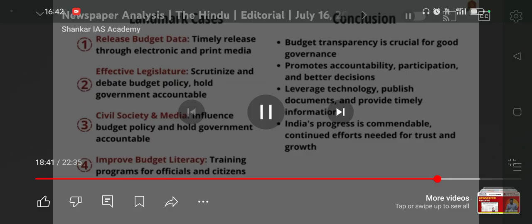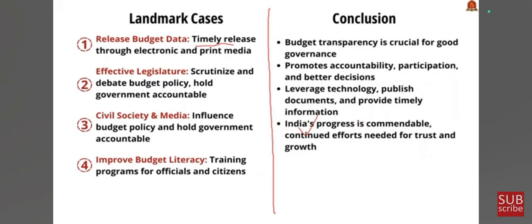The second part covers ways to promote budget transparency. First is the timely release of budget data — systematic and timely release of all relevant fiscal information is directly linked with budget transparency, including disclosing budget documents and simplified budget information through electronic and print media. Secondly, an effective role for the legislature — it must scrutinize the budget report, independently review, debate and influence budget policy, and effectively hold the government to account. Thirdly, an effective role for civil society and media — citizens, directly or through these vehicles, must be positioned to influence budget policy and hold the government to account. Finally, improving budget literacy of parliamentarians, government officials, elected representatives, journalists, and civil society representatives, and increasing their capacity to analyze the budget through budget literacy manuals and capacity building programs.